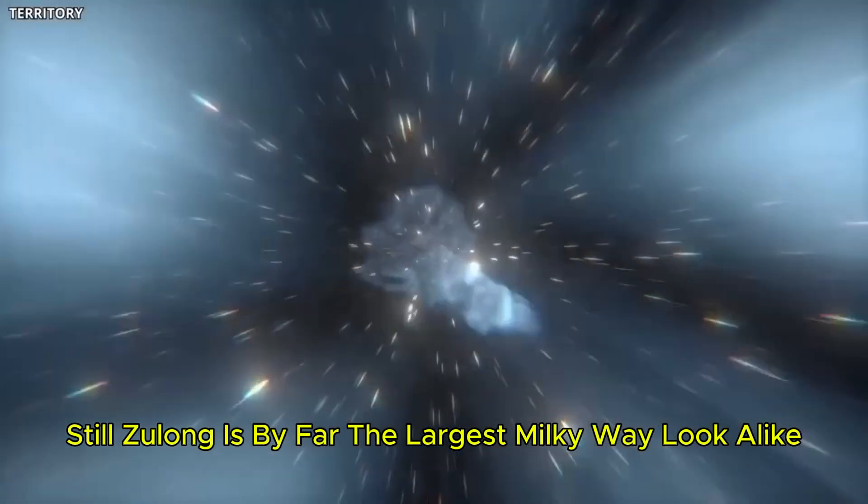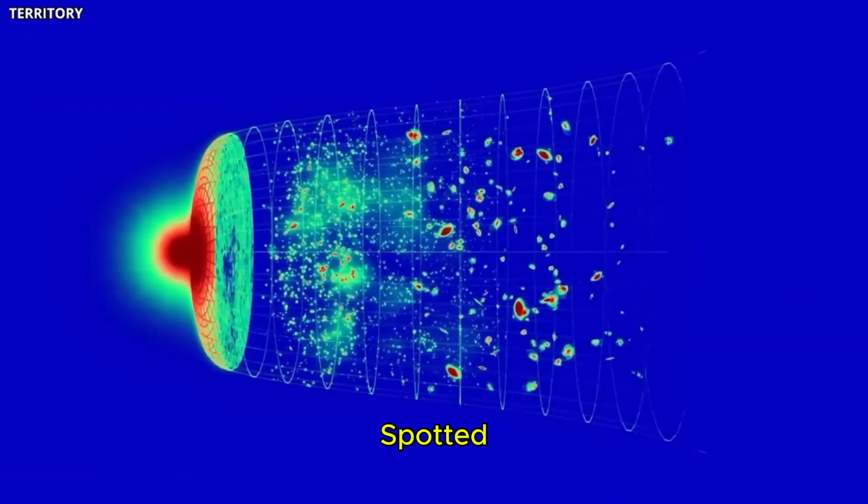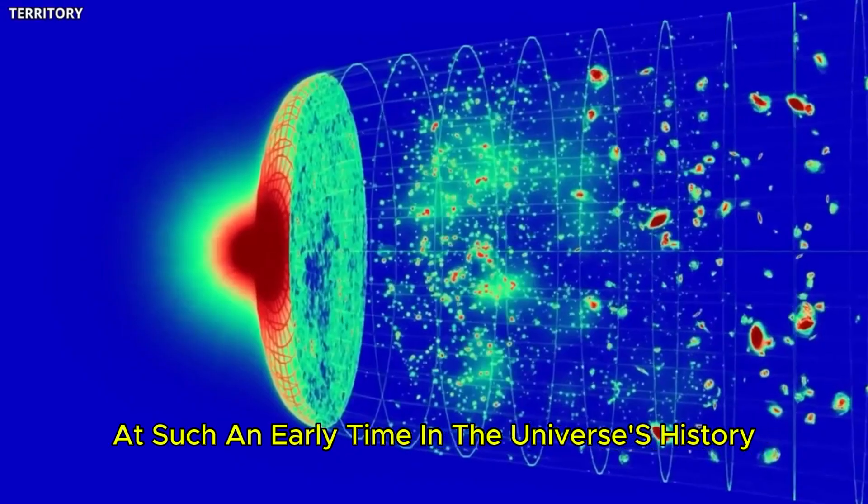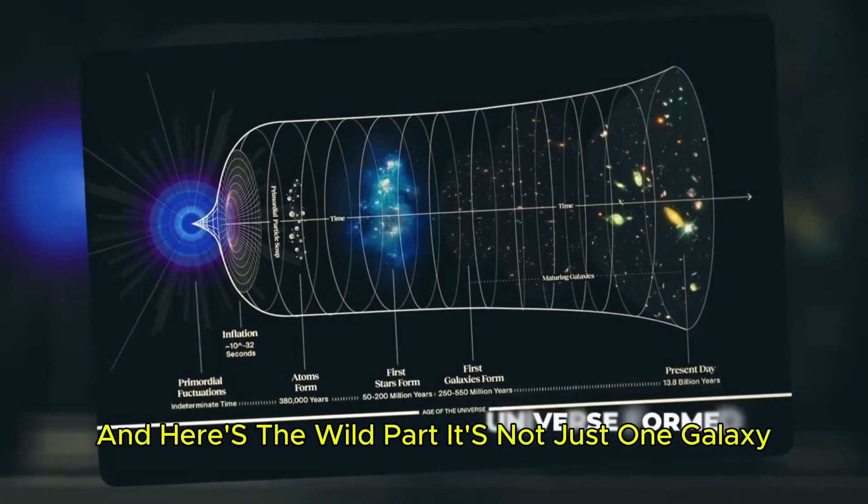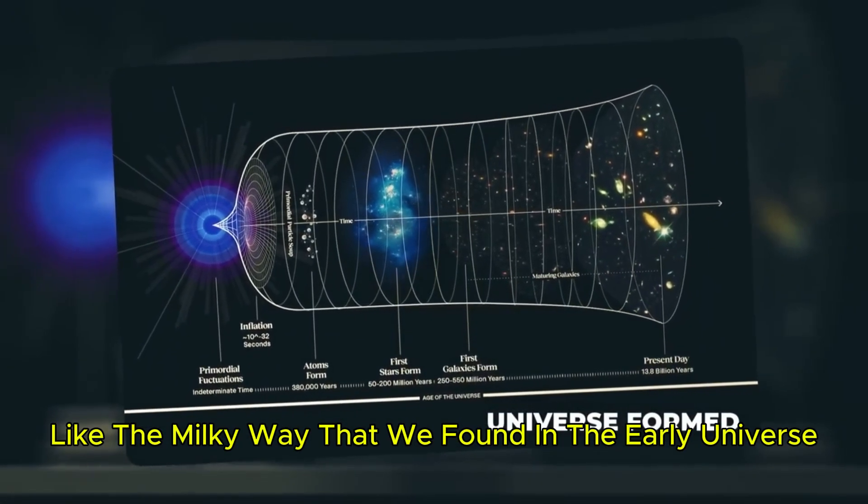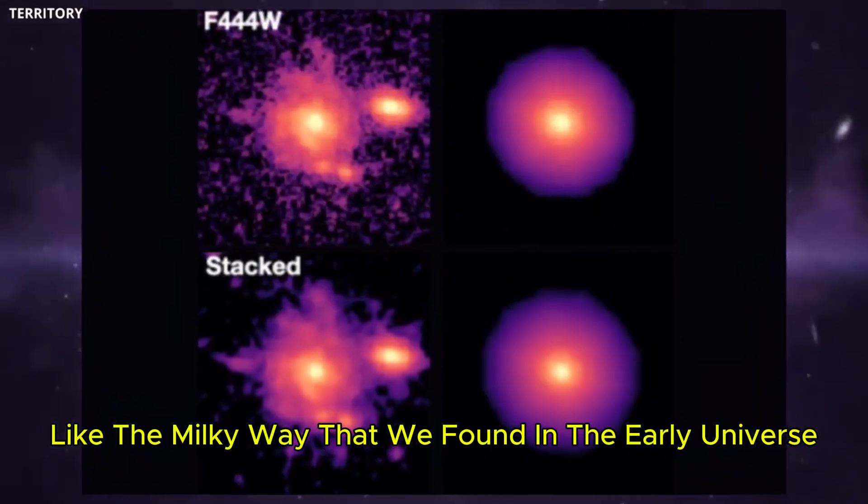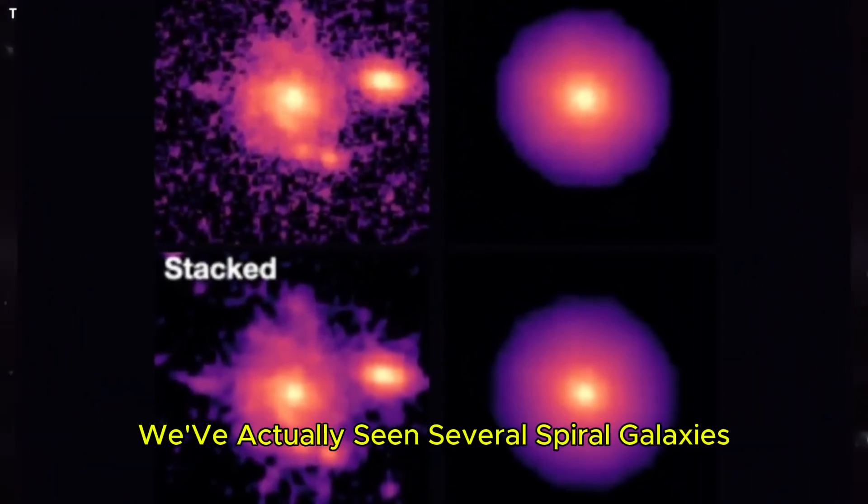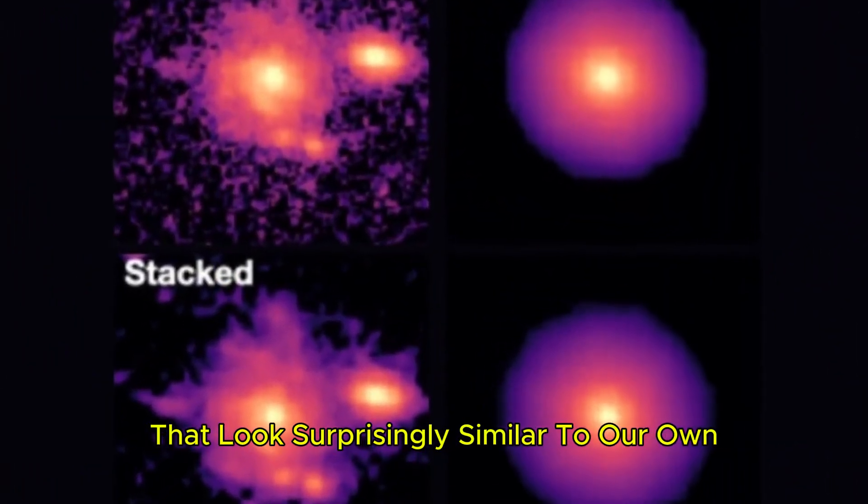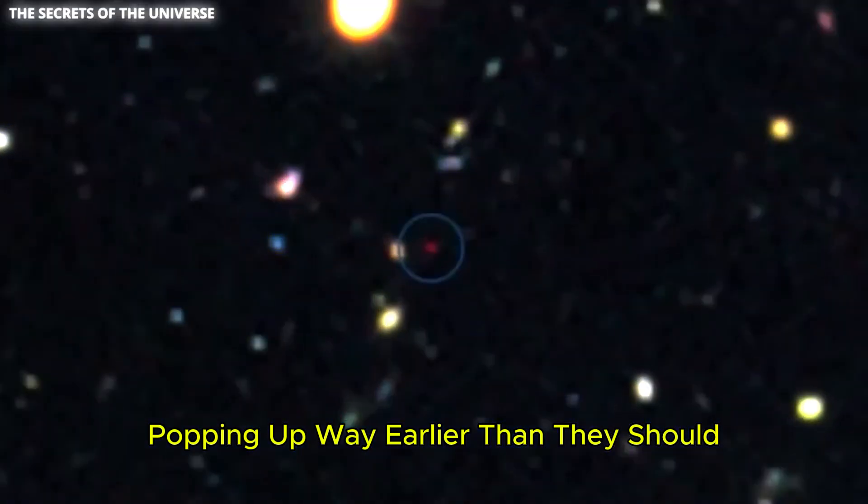Still, Zulong is by far the largest Milky Way lookalike spotted at such an early time in the universe's history. And here's the wild part. It's not just one galaxy like the Milky Way that we found in the early universe. We've actually seen several spiral galaxies that look surprisingly similar to our own popping up way earlier than they should.